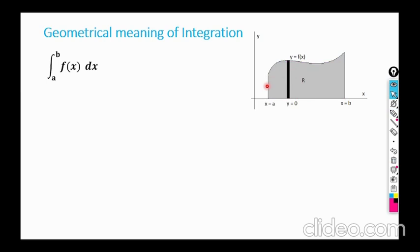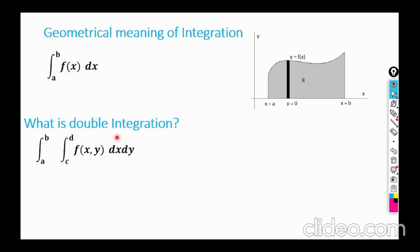So the area under the curve is given by integration from a to b of f(x) dx. Now, if one definite integral represents the area under the curve, what about the double integration? What is the geometrical meaning of the double integral? Double integral is generally written as the integral from a to b, c to d of f(x,y) dx dy. This double integral gives us the volume under the surface z = f(x,y).